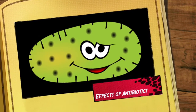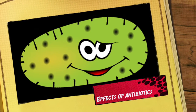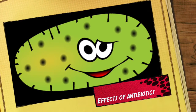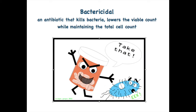Effects of antibiotics. Bactericidal is when the antibiotic kills the bacteria, therefore lowering the viable count but maintaining the total cell count. Notice when the bacteria dies, it remains intact.